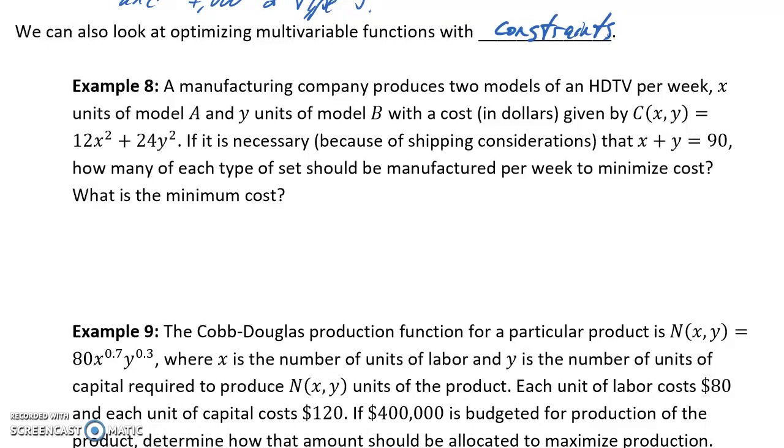So in example 8, we have a company that produces two models of HDTVs. We have a cost function below, and it's necessary, because of shipping considerations, that x plus y equals 90. So meaning the total number of televisions that's produced has to be exactly 90. How many of each type should we manufacture in order to minimize our cost? And then we want to know what's that minimum cost.